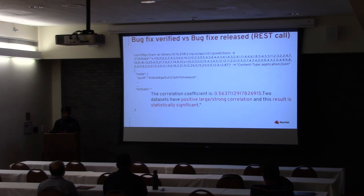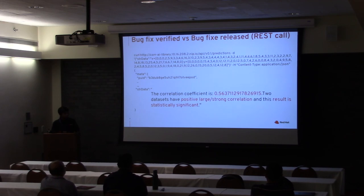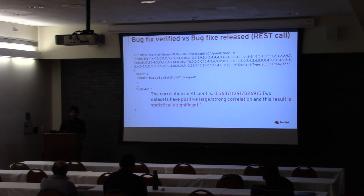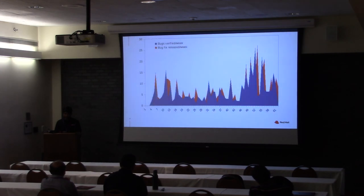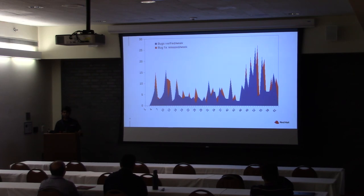Running this query, the result came back statistically significant with a strong correlation — but the value is 0.56, just over 50%, meaning it's a better-than-even chance they're keeping up with the process. You can dive deeper and look at specific trends using regression if there's a strong enough correlation to model the behavior.